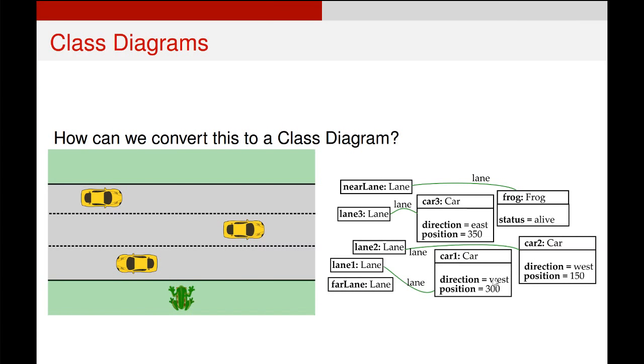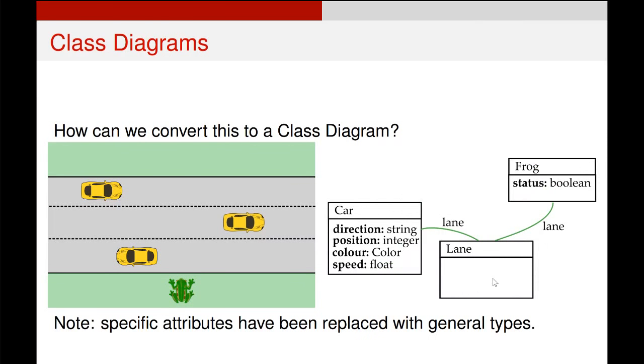So here's our object diagram. To convert it to a class diagram is very simple. We essentially group it down by objects and we say we've got now three classes: we've got a Car class, a Lane class, and a Frog class.